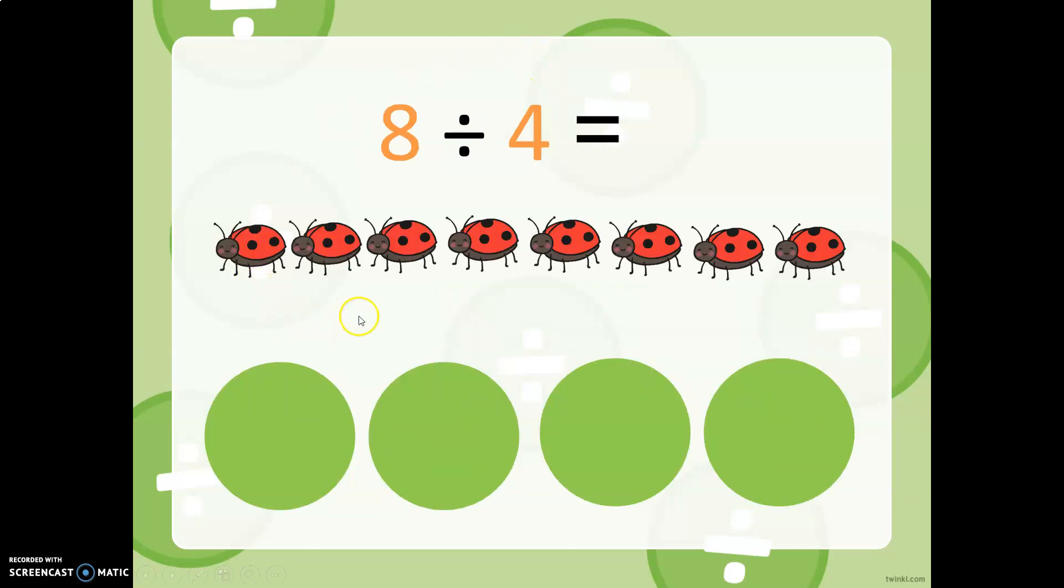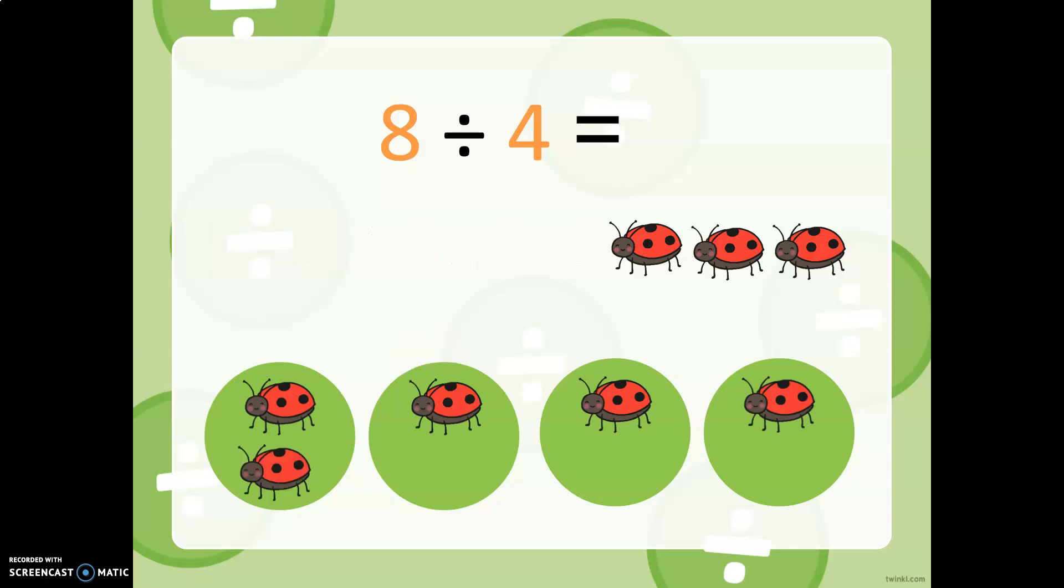Here we have eight ladybugs. Let's say these are leaves, not tables. We have four leaves. Let's give each leaf an equal amount of ladybugs. So each leaf gets two ladybugs. So if we have eight ladybugs divided by four, we get two per leaf.